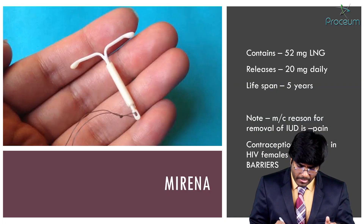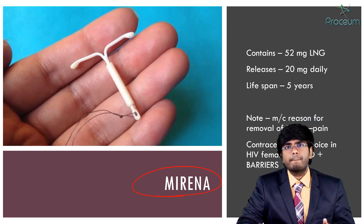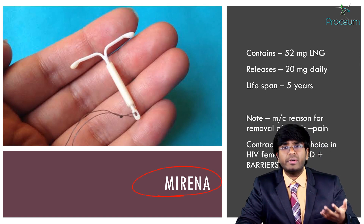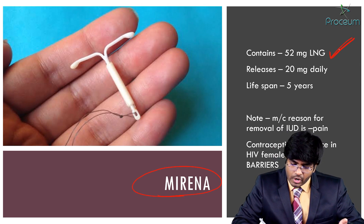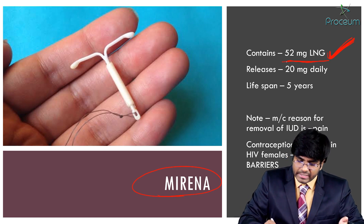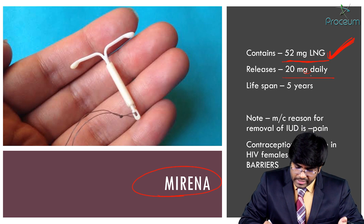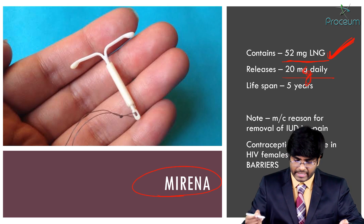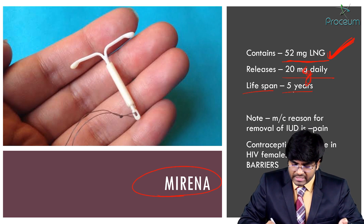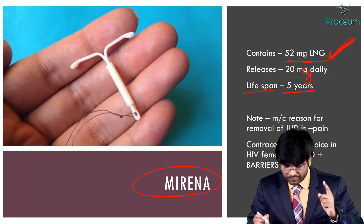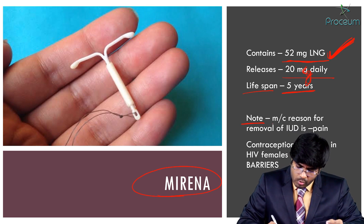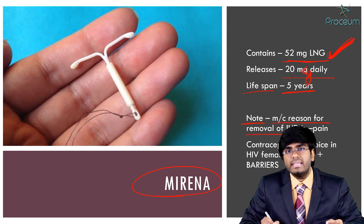Mirena is a third generation IUD containing levonorgestrel. It contains 52 micrograms of levonorgestrel in total and releases 20 micrograms per day. Its lifespan is five years. For comparison: Copper T380A lasts 10 years, and Progestacert lasts one year.